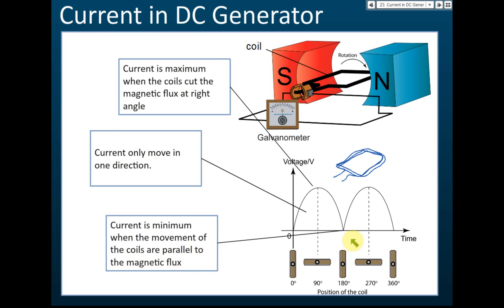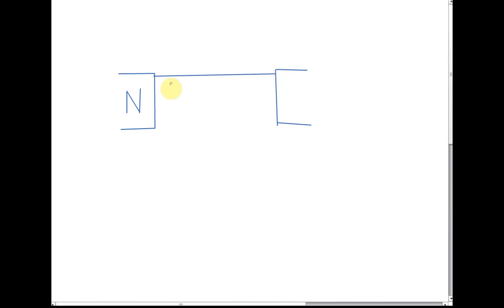Current is maximum when the coil cuts the magnetic flux at right angles, and minimum (zero) when the movement of the coil is parallel to the magnetic flux. Some students ask: why is it zero when vertical and maximum when horizontal? Let me explain using a diagram of magnetic flux between a north and south pole.